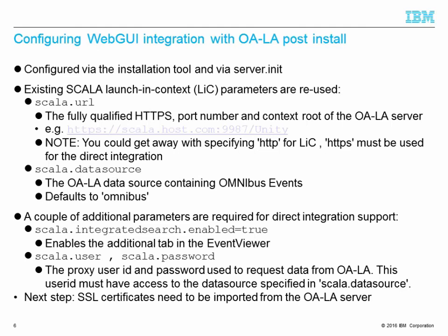It's worth noting that for launching context you could get away with specifying HTTP and the web browser would redirect you to the HTTPS page, but when doing direct integration HTTPS must be used. scala.datasource is the name of the OALA data source containing Omnibus events, and it defaults to 'omnibus'. A couple of additional parameters are required for direct integration: scala.integratedsearch.enabled=true — this enables an additional tab in event viewer — and scala.user and scala.password, the proxy user ID and password used to request data from LA. This user ID must have access to the data source specified in scala.datasource.